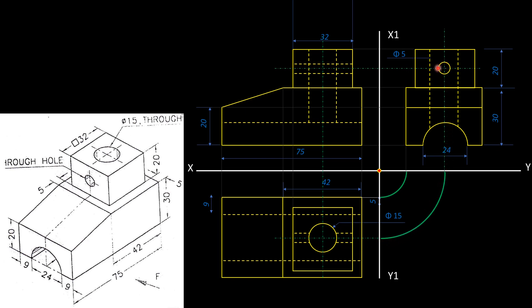We have access to the circle and semicircle in this area. We have hidden edges in the top view — hidden holes that need to be projected. In the reverse direction, project this hole to go to the circle. That is the straight line with hidden edges. The third view is now complete.